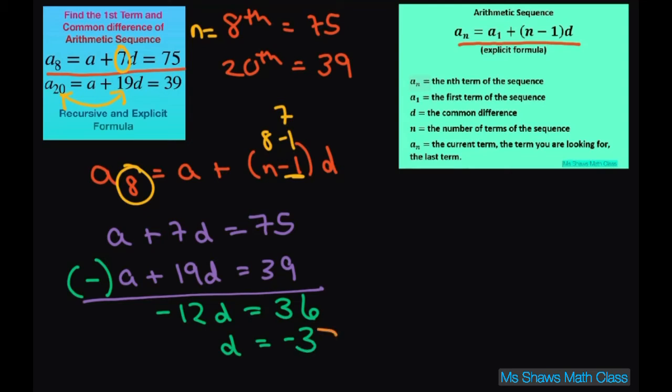And then to find your, so that's your common difference. To get your first term, just plug it back into one of these. So I'll plug in that 75 equals A plus 7 times D. So 75 equals A minus 21.